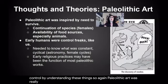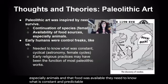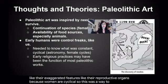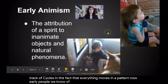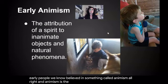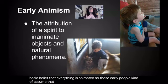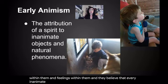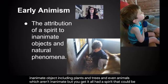Paleolithic art was really all about survival — making sure that species were continuing, especially animals, and that food was available. Early people needed to know what is constant and predictable. Early people believed in something called animism, the earliest known religious practice, which is a basic belief that everything is animated. These early people assumed that everything was like them — that it had a spirit within it and feelings. They believed that every inanimate object, including plants, trees, and animals, had a spirit that could be communicated with and controlled.